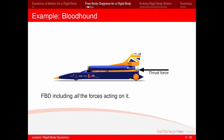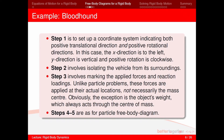Now let's look at an example of the Bloodhound supersonic car. First we draw the free body diagram including all the forces acting on it. Step one, as mentioned before, is to set up a coordinate system indicating both positive translational direction and positive rotational direction. In this case, the X direction is to the left — the car is moving to the left, so we assume that is the positive X direction. The Y direction is vertical upward, and positive rotation is clockwise. Step two involves isolating the vehicle from its surroundings, drawing just the outline of the car and ignoring anything outside that outline.